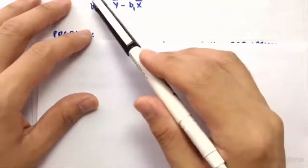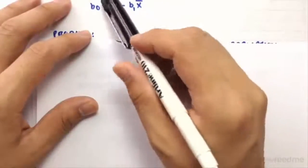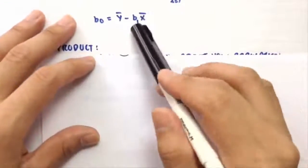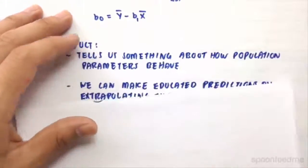And then also beta with a subscript 0 equals to the mean of y minus b1, so that one here, this big sum here, just this here, multiplied by the mean of x.